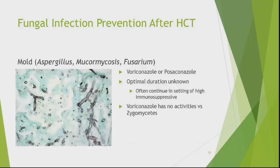For mold, everybody worries about aspergillus, mucor, fusarium, rhizopus, and rhizomucor. Prophylaxis is usually with one of the azoles — voriconazole or posaconazole. Keep in mind that voriconazole doesn't have activity against mucor. Optimal duration is again unknown — sometimes you keep patients on antifungal therapy if they're on high-dose immunosuppressives for severe GVHD.